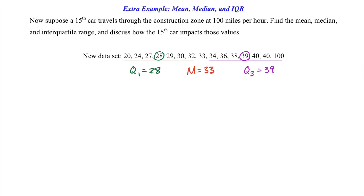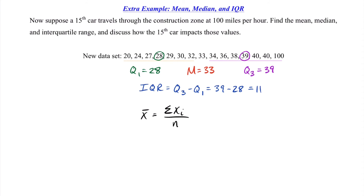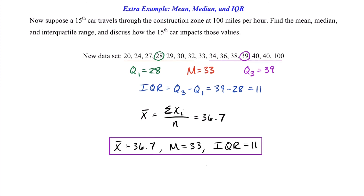Now that we have Q1 and Q3, we can find our IQR. The formula is Q3 minus Q1, which means 39 minus 28, giving us an IQR of 11 miles an hour. Now we need to find the mean. To find the mean, we take the sum of all observations and divide by the sample size of 15. We end up with approximately 36.7. So we have our mean of 36.7, median of 33, and IQR of 11.